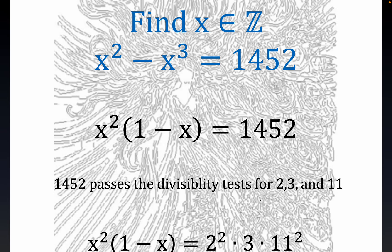1452 passes the divisibility test for 2, 3, and 11. Now it's clear it passes it for 2. The sum of the digits is divisible by 3, so it does it for 3. It's not divisible by 5. There's a divisibility test for 7, but you can tell it doesn't work just because 7 does not divide 52. And so it turns out it's divisible by 11, and you guys probably have seen that test.